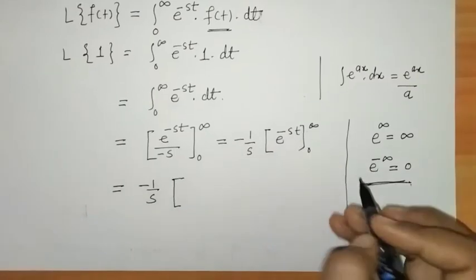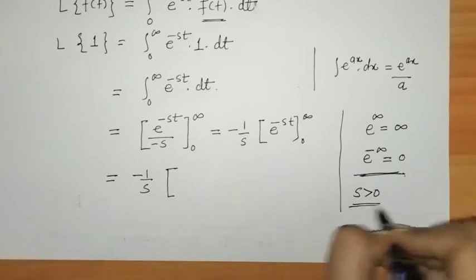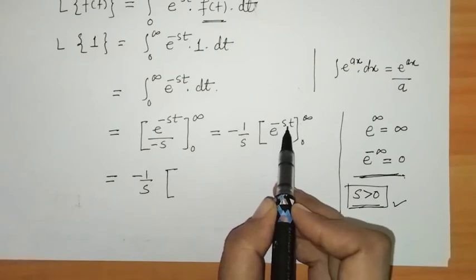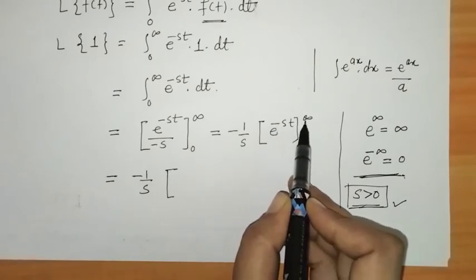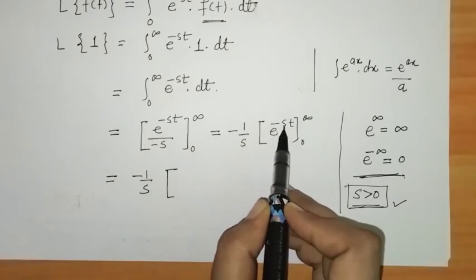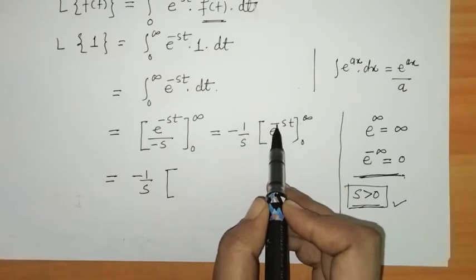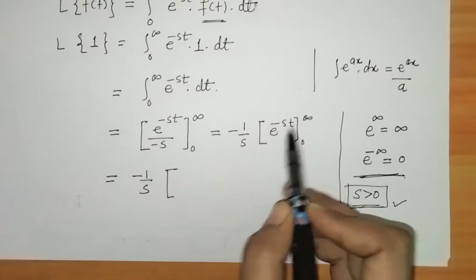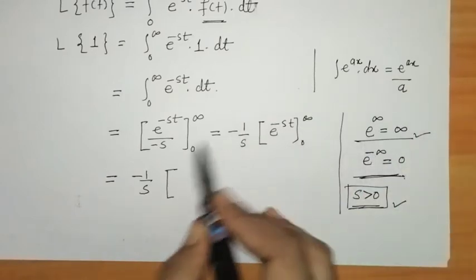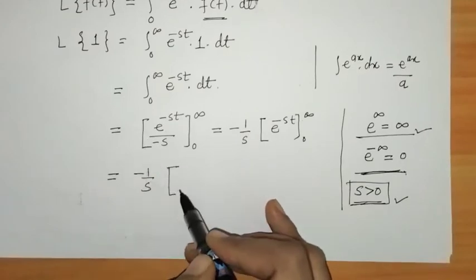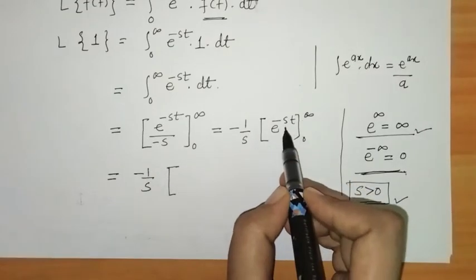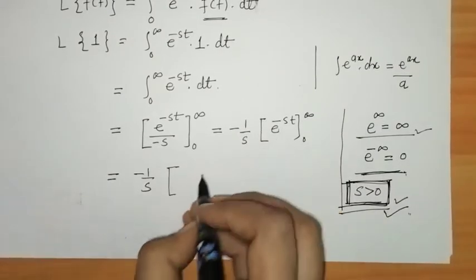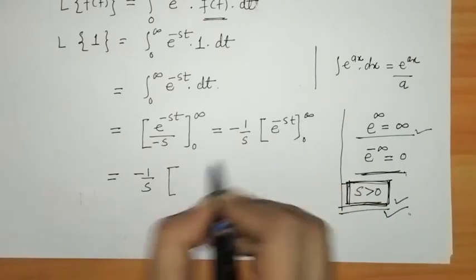We must remember that s is greater than 0. When s is positive, we get e raised to minus infinity. But if s is less than 0, then minus times minus gives plus, so we would have e raised to plus infinity, which is infinity. Therefore the Laplace transform is not defined when s is less than 0, so we require s greater than 0.